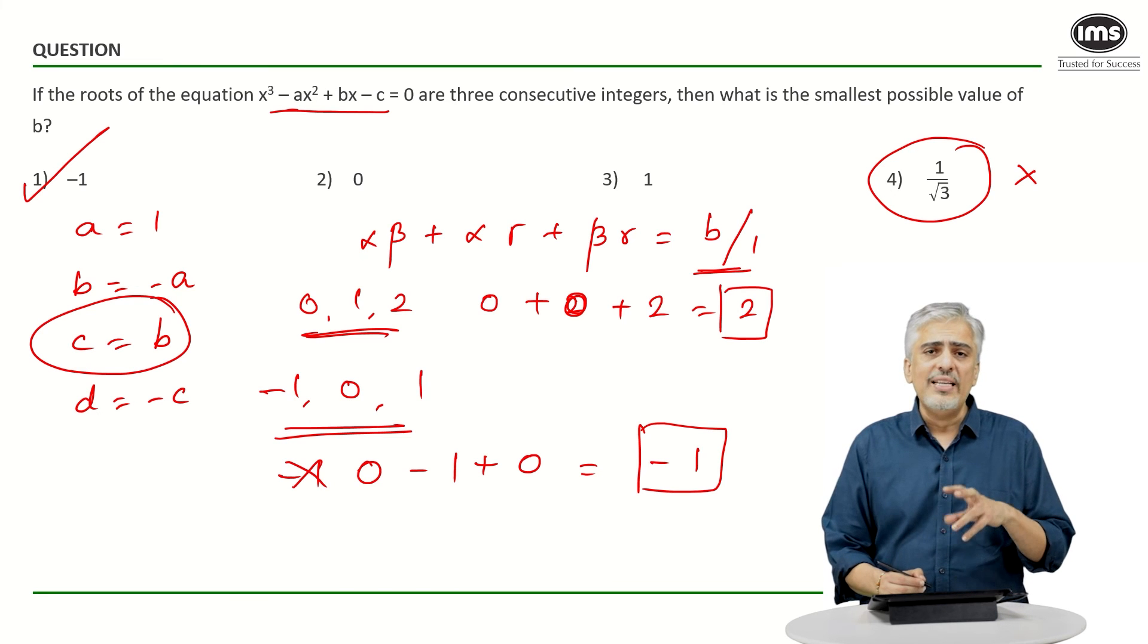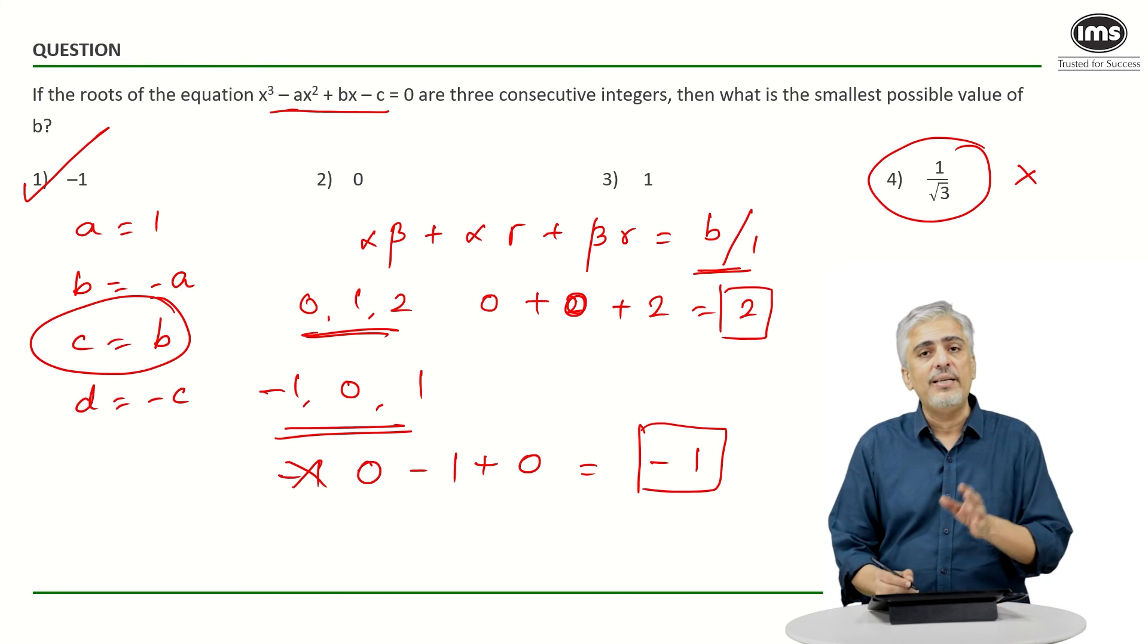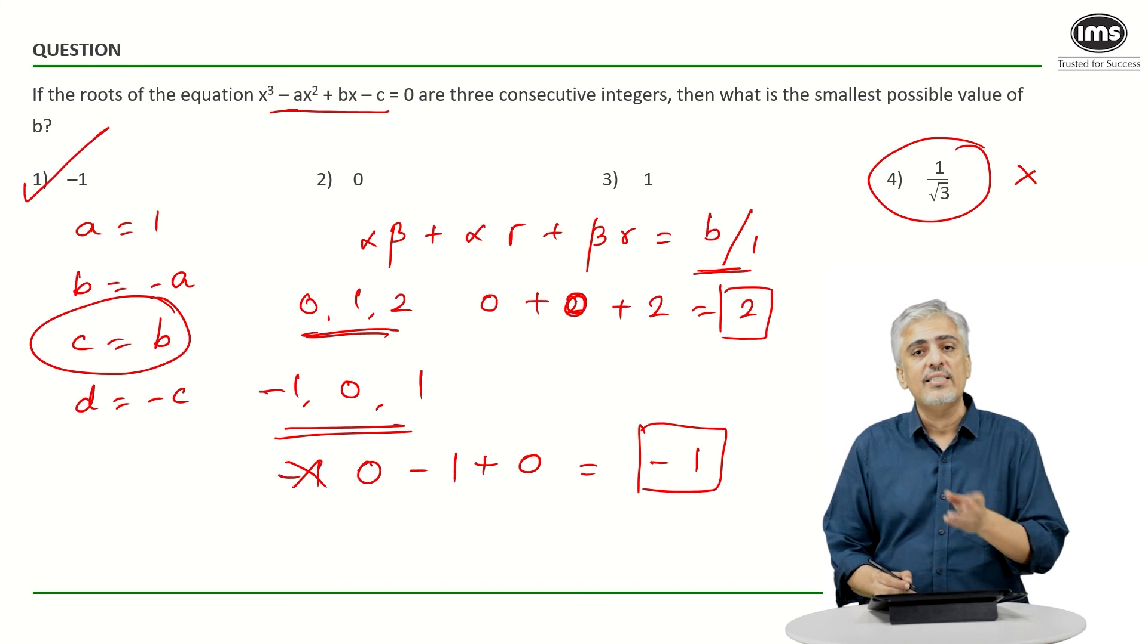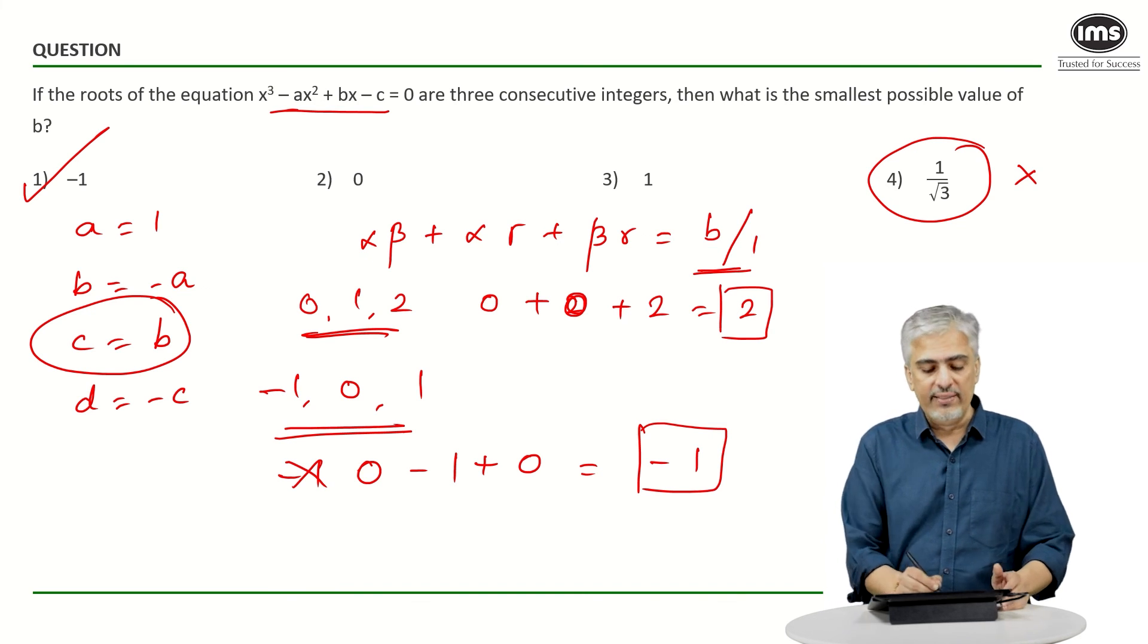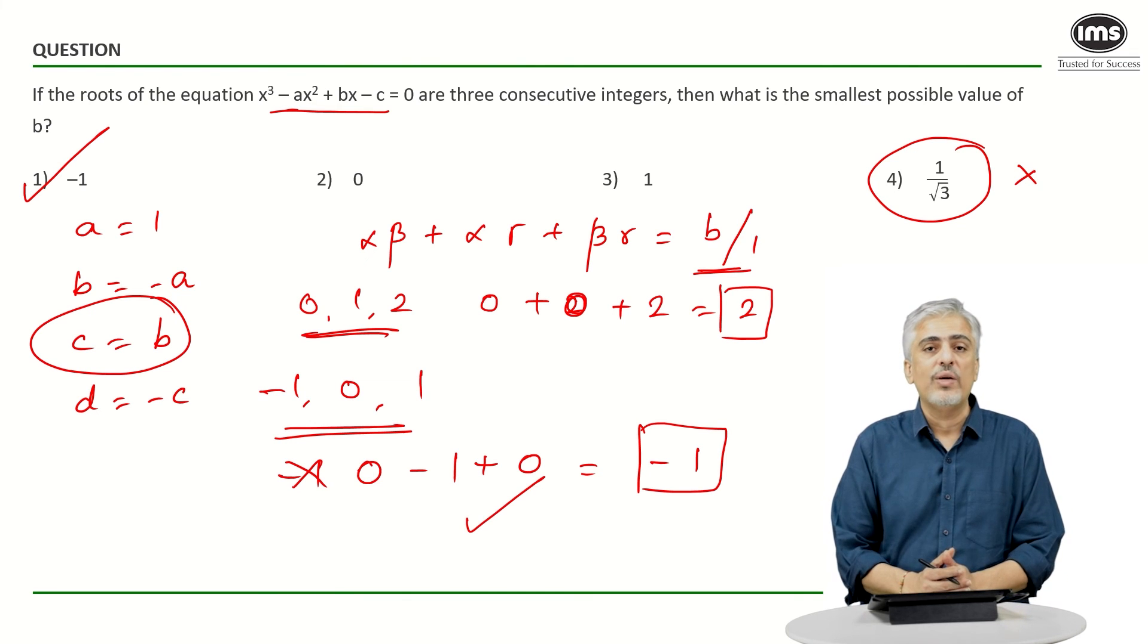So this was a pretty straightforward question if you knew the property that αβ + αγ + βγ is c/a, in this case b/1. And just then think a little bit with values - it becomes very easy. Well, we will see you next time with one more question and maybe with a new module also.